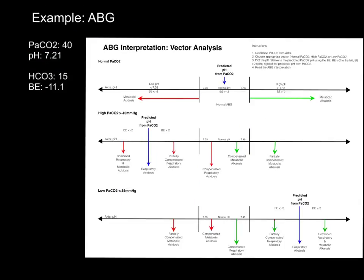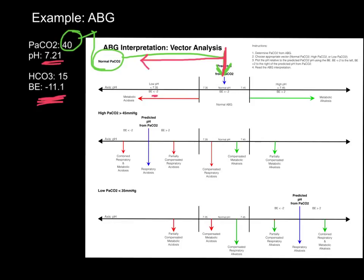Let's look at another example. The first thing I'm going to look at again is my CO2 — and that's a normal CO2. A CO2 of 40 is a normal CO2, so I'm going to start here on my normal CO2 vectors, right in the center. Because my base excess is negative, that tells me from my starting point I'm now going to go to the left. I've also got a very low pH, so both of those are driving my metabolic vector to the left. I have no CO2 vector because I'm right in the normal range. So this blood gas leads me all the way down to a metabolic acidosis — I only have a metabolic component.